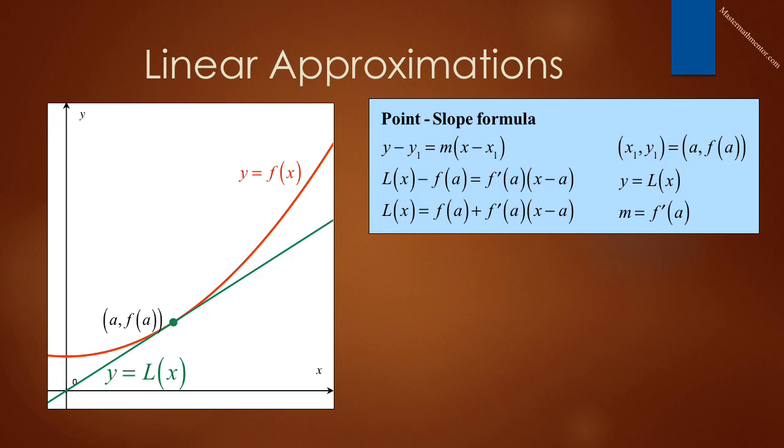Let's examine our point-slope formula, which we know is y minus y1 equals m times quantity x minus x1. However, the point x1, y1 is the same in this situation as the point a, f of a. In this case, y is equal to L of x. And m, which is the slope of the line, is f prime of a. So our point-slope formula becomes L of x minus f of a equals f prime of a times the quantity x minus a. And therefore, L of x is equal to f of a plus f prime of a times the quantity x minus a.